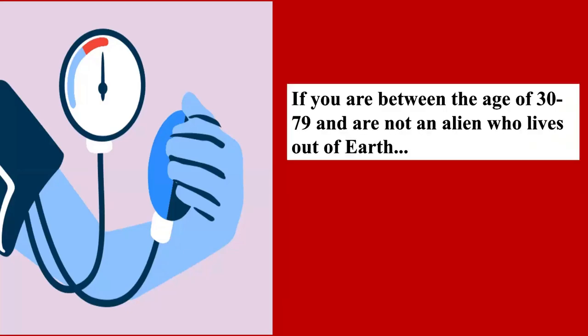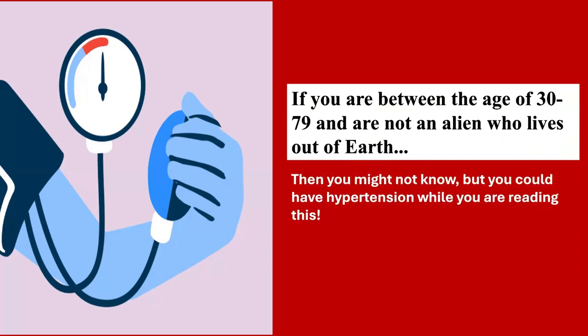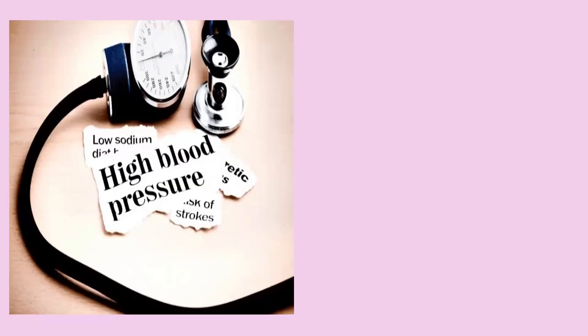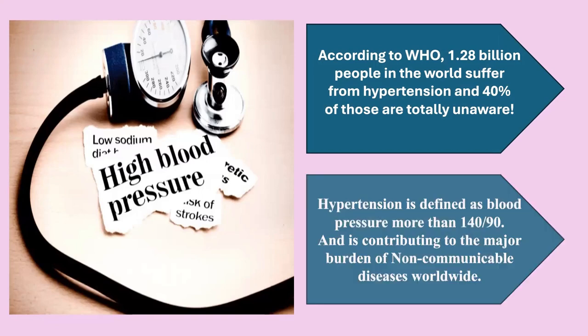If you are between the age of 30 and 79 and are not an alien who lives off Earth, then you might have hypertension while you're reading this. According to WHO, 1.28 billion people in the world suffer from hypertension, and 40 percent of those are totally unaware. Hypertension is defined as blood pressure more than 140 by 90.